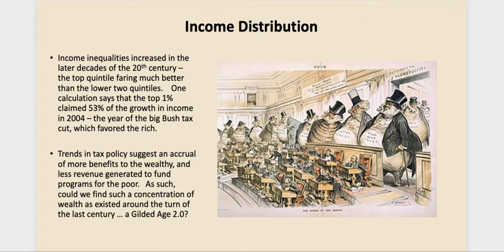This editorial cartoon is from the Gilded Age — the period around the turn of the 20th century, the era of The Jungle and Teddy Roosevelt, who was the trust buster breaking up big corporations. There was just vast wealth concentrated in the hands of very few, not unlike today. Our tax policy trends now suggest that more benefits are accruing to the wealthy and less revenue is being generated to fund services for the poor. The authors wonder if we could find such a concentration of wealth again — a new Gilded Age 2.0.